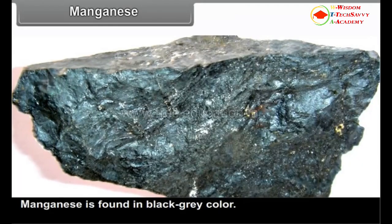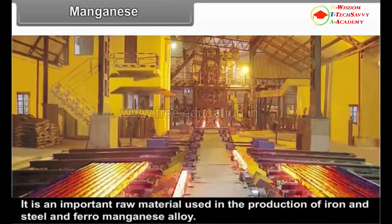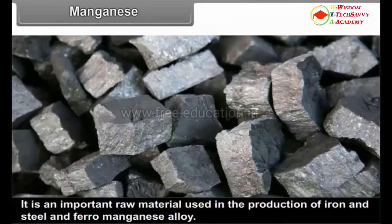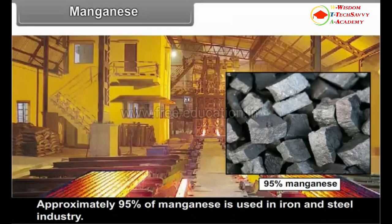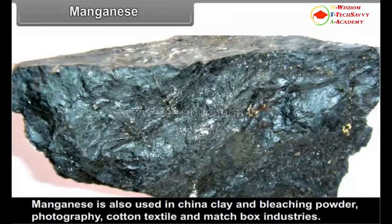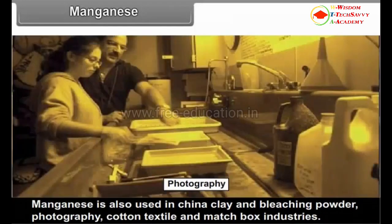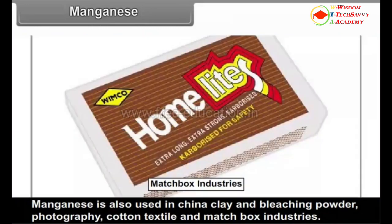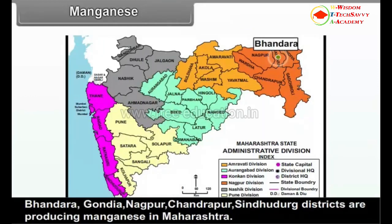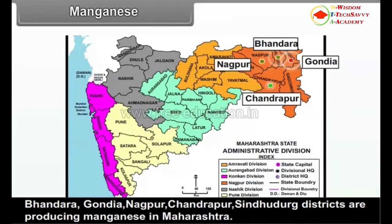Manganese. Manganese is found in black-grey color and is an important raw material used in the production of iron and steel and ferro-manganese alloy. Approximately 95% of manganese is used in the iron and steel industry, with 10 kg of manganese used for the production of 1 ton of steel. Manganese is also used in china clay, bleaching powder, photography, cotton textile and matchbox industries. Maharashtra is a leading producer of manganese in India. Bhandara, Gondia, Nagpur, Chandrapur and Sindhudurg districts are producing manganese in Maharashtra.